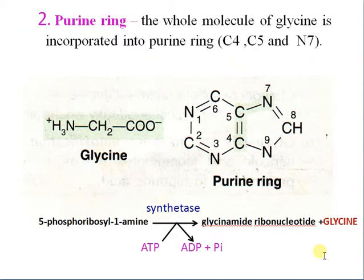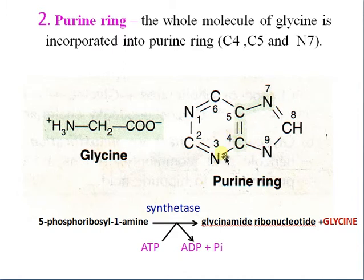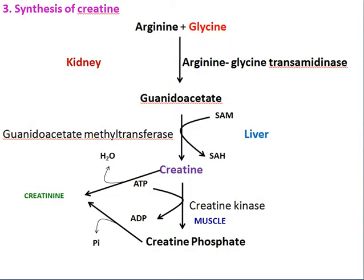Coming to the purine ring: two molecules of glycine are incorporated into the purine ring at positions C4, C5, and N7. These three components — C4, C5, and N7 — are formed from glycine.